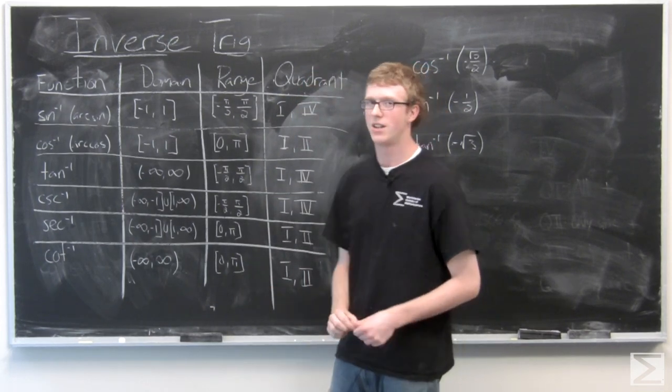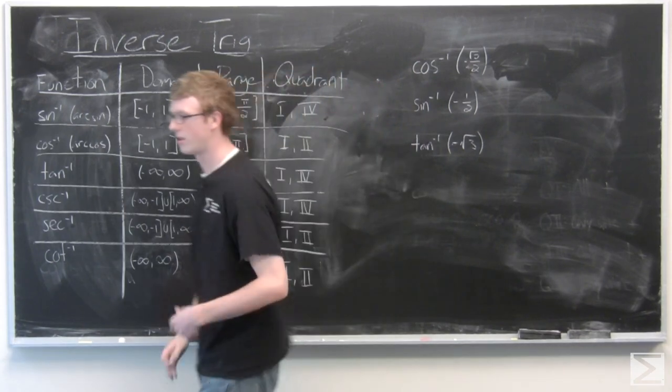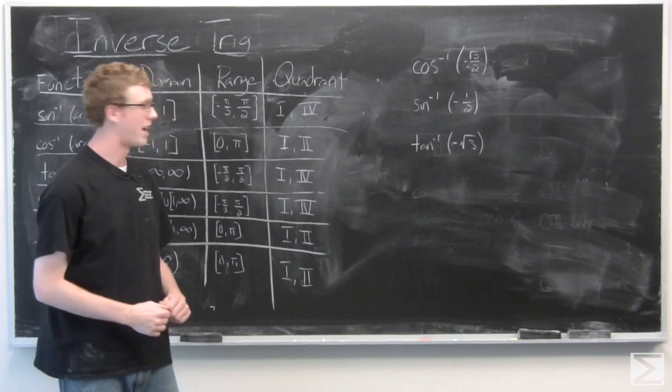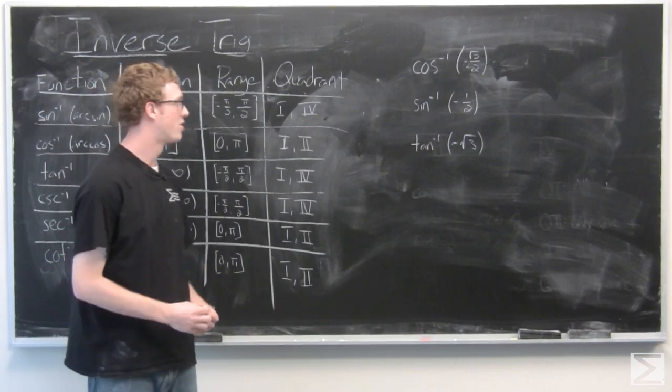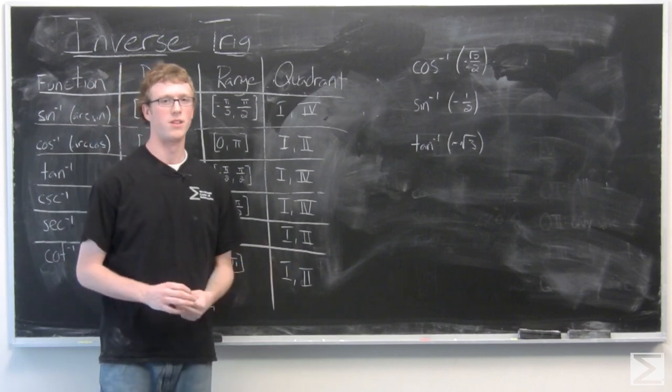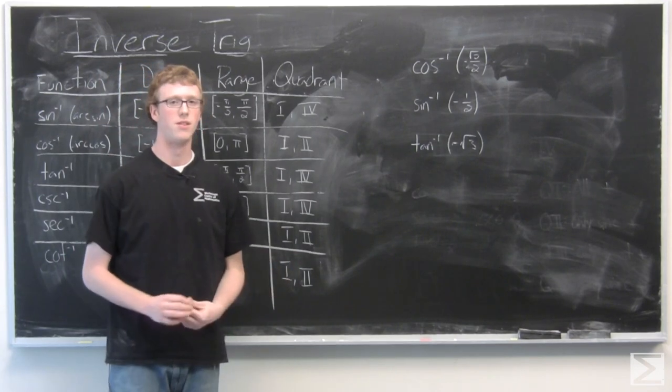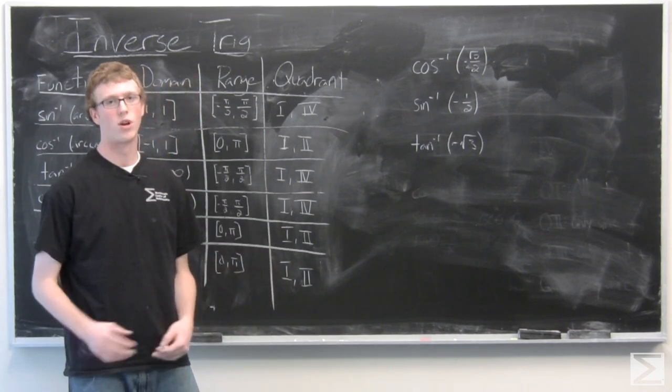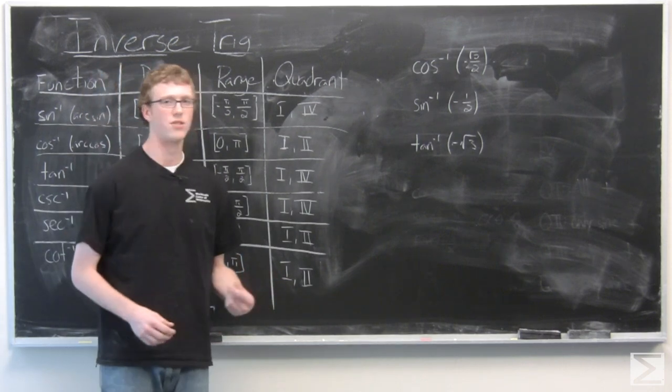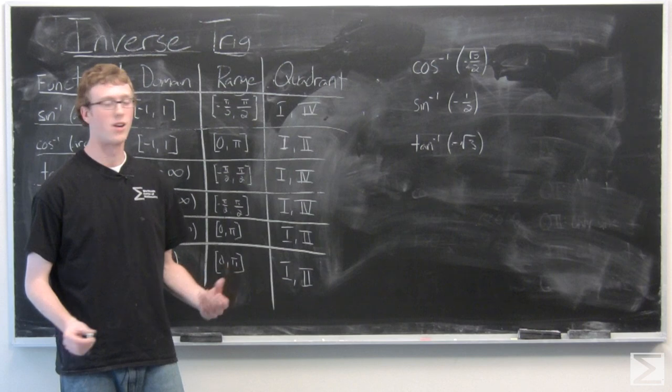This means that if we find an angle in quadrant 4, which is what we may come up with if we're looking at a sine, we need to subtract 2π from it so that that value is in the range. Typically this would be like finding the angle is 7π over 4, but what you would do is subtract 2π and that angle is actually just negative π over 4.